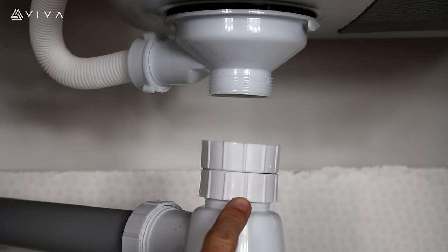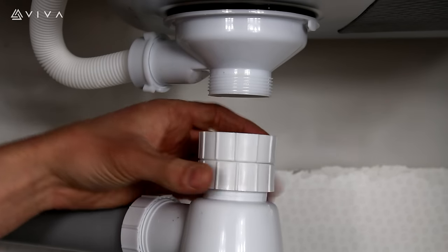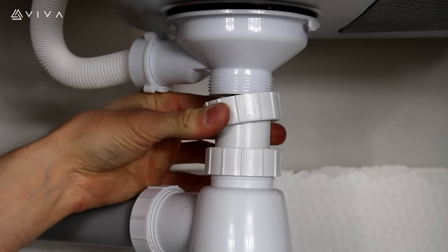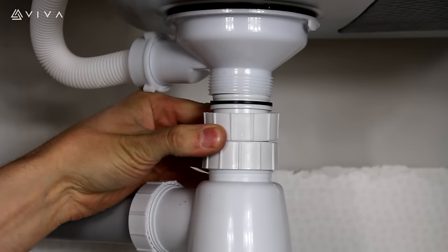Now to fix the trap to the waste, loosen the locker nut. The adjustment tube can then be set to the desired height.